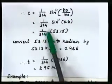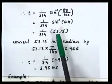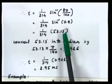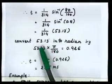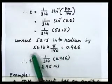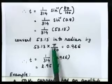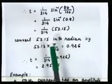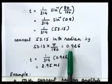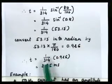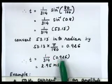So (1/314) sin⁻¹(0.8) — sin⁻¹(0.8) gives 53.13°, which is an angle in degrees. Convert this degree into radian by multiplying 53.13 by π/180. This conversion is required because you have to multiply with omega. The answer in radian is 0.926, so t = (1/314) × 0.926.